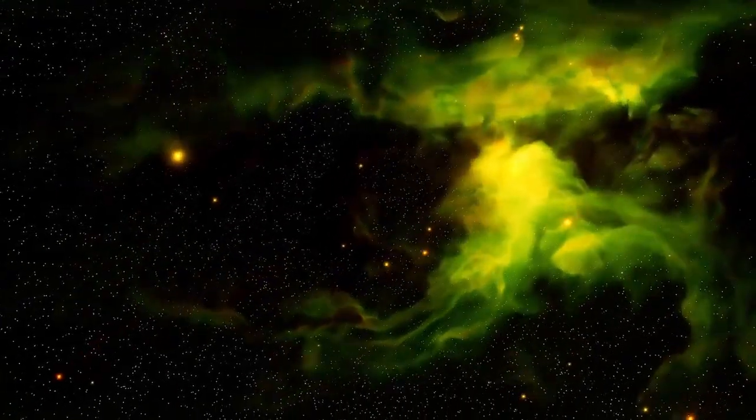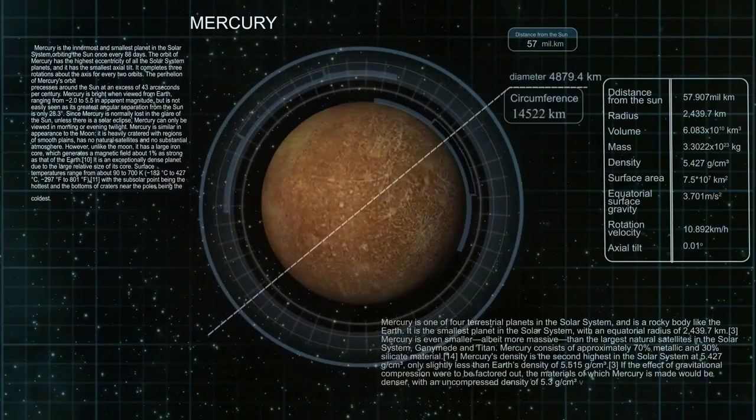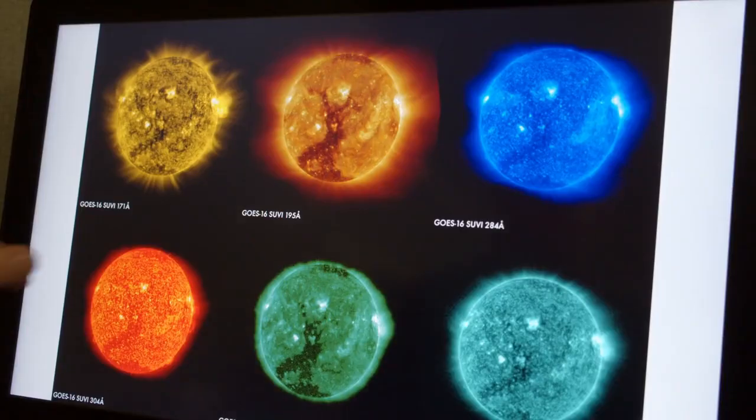To put that into perspective, it might have formed before our sun even existed, a relic from a star system that has long since died. This staggering age means that 3i Atlas could be carrying materials from an era of the universe that no longer exists.